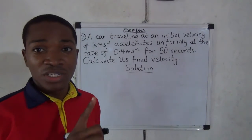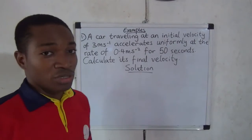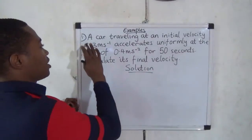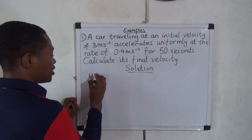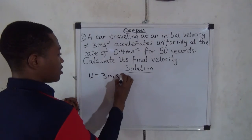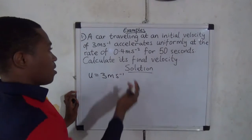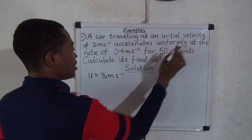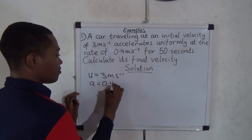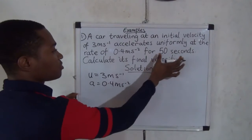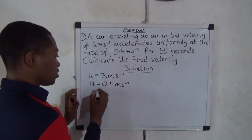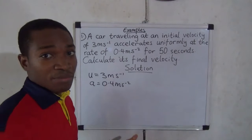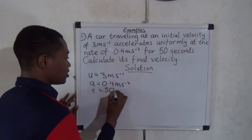What would you do here? The first step is to read the question carefully — we have just done that. The second step is to write out the parameters given in the question. The first parameter: initial velocity U equals 3 meters per second. The second parameter: acceleration A equals 0.4 meters per second squared. The third parameter: time T equals 50 seconds.